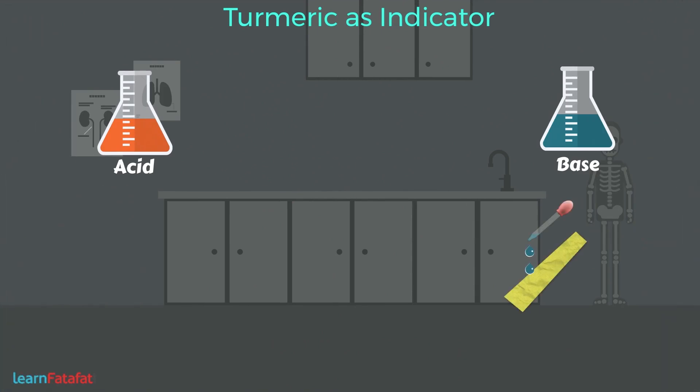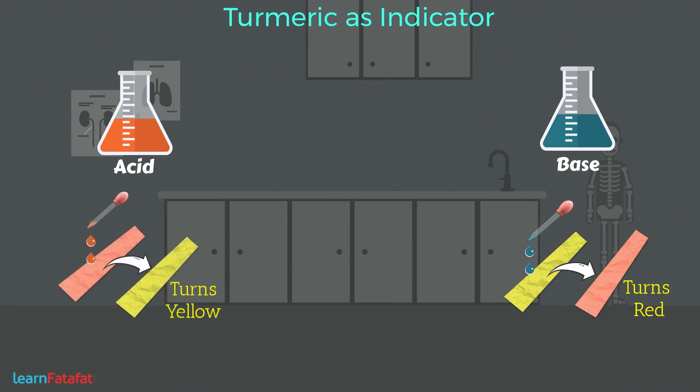For bases, yellow turmeric strip turns to red, while for acids, the red turmeric strip turns to yellow. If there is no effect, then the solution is neutral.